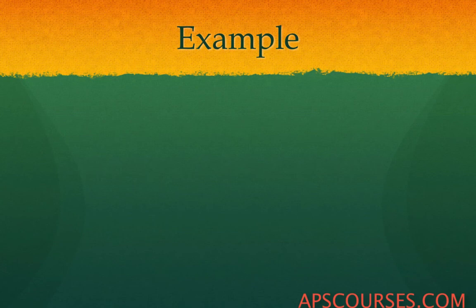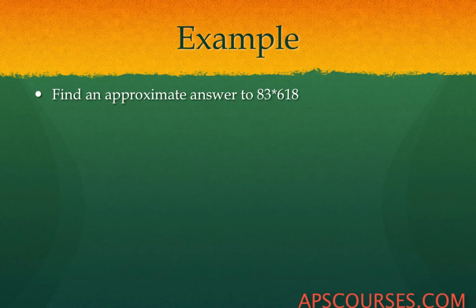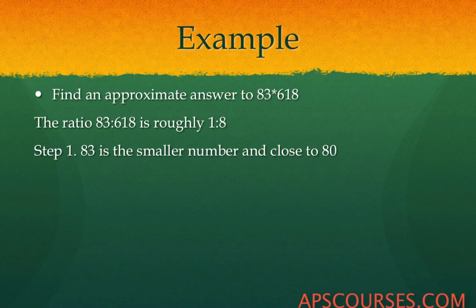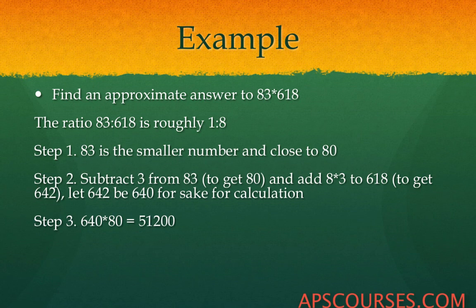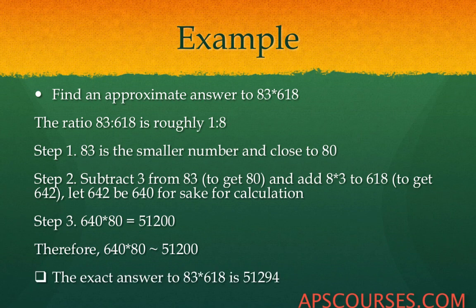Find an approximate answer to 83 multiplied by 618. The ratio is roughly 1 is to 8. Step 1: change 83 to its nearest multiple of 10, which is 80, by subtracting 3. Step 2: perform the reverse operation on 618 by adding 8 times 3, giving 618 plus 24 equals 642, approximated as 640. Multiply 640 by 80 to get 51200. The exact answer is 51294.